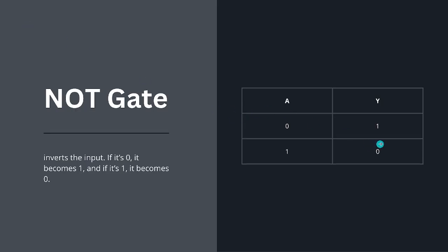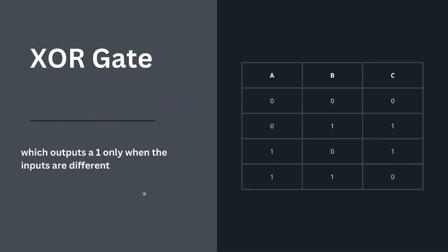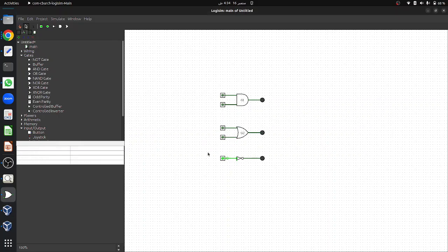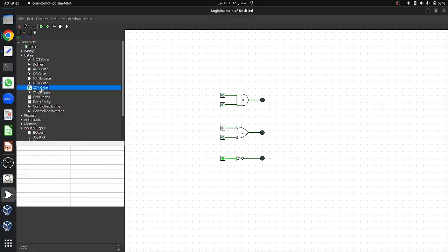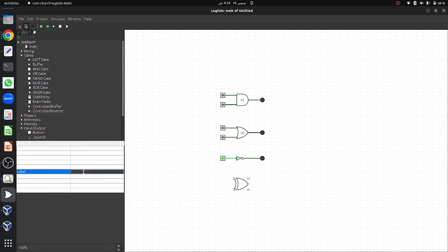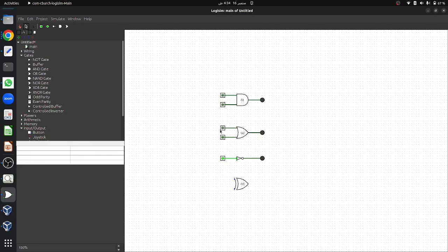Let's move to our fourth gate, the XOR gate. The XOR gate generates a high output only when either one of the inputs is 1, but not both. If both inputs are 0 or both inputs are 1 the output remains 0. To design the XOR gate, select it and place it in the canvas. By default it contains 5 inputs, so convert it to 2 and label it G3. Connect the input pins to the XOR gate.